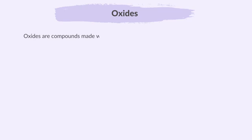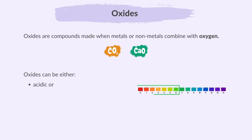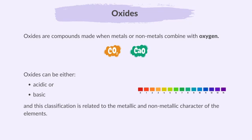First, let's classify oxides based on their properties. Oxides are compounds made when metals or non-metals combine with oxygen. Examples include carbon dioxide and calcium oxide. Oxides can be either acidic or basic, and this classification is related to the metallic and non-metallic character of the elements.